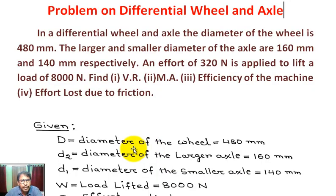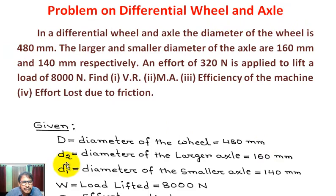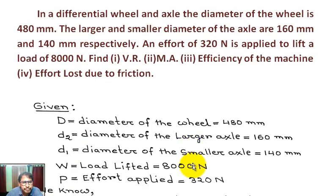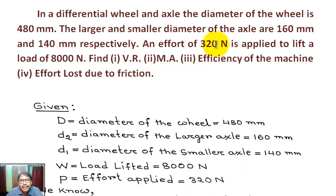Now, given data: capital D, diameter of the wheel, equals 480 millimeter. d2, diameter of the larger axle, equals 160 millimeter. d1, diameter of the smaller axle, equals 140 millimeter. W, load lifted, equals 8,000 Newton. P, effort applied, equals 320 Newton.